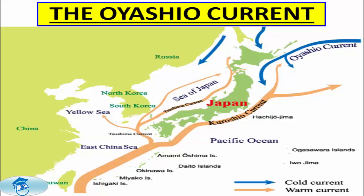The waters of the Oyashio Current form probably the richest fishing grounds in the world, owing to the extremely rich nutrient content of the cold water and very high tides — up to 10 meters in some areas — which further enhances the availability of nutrients. It also causes Vladivostok to be the most equatorward world port to seasonally freeze, requiring ice-breaking ships to remain open in winter. However, this has relatively little effect on the fish yield through the Sea of Okhotsk, because the large tides mean freezing does not occur so easily.